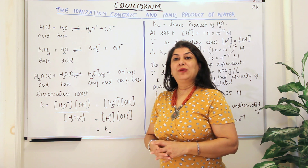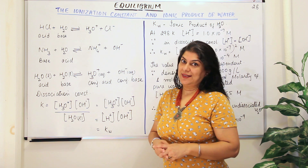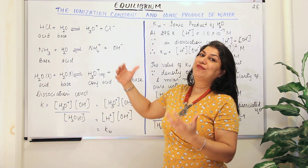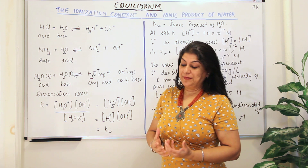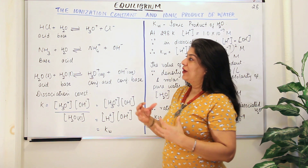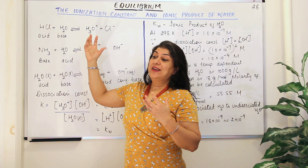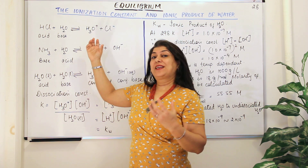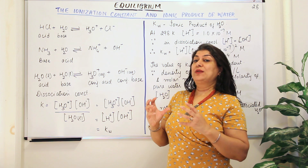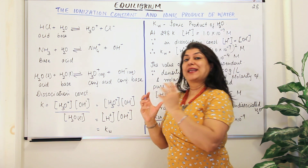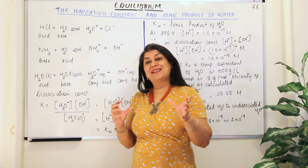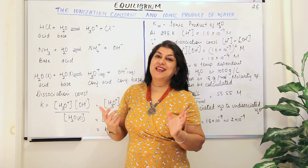We have studied about the equilibrium constant. The ionization constant is just a form of equilibrium constant. Let us begin by talking about water — in the previous couple of videos I explained that water, when it reacts with an acid, behaves as a base, and when it reacts with a base, it acts as an acid.